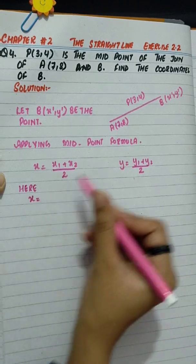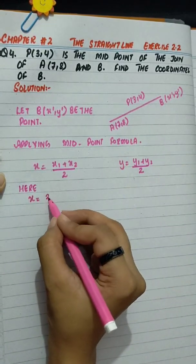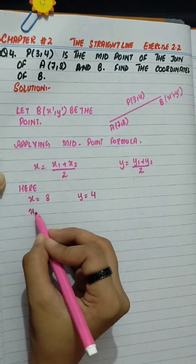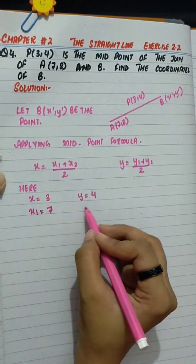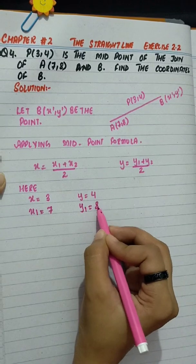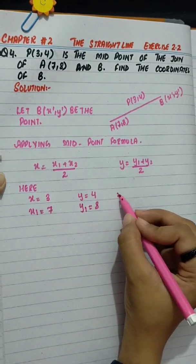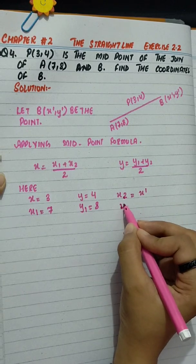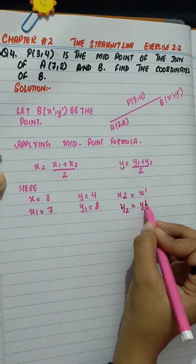Here x is midpoint given, 3, y equals 4, x1 is 7, y1 is 8, and x2 is x', y2 is y'.